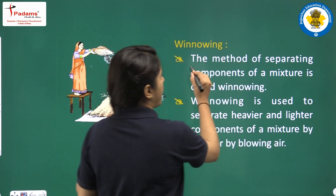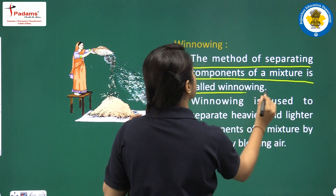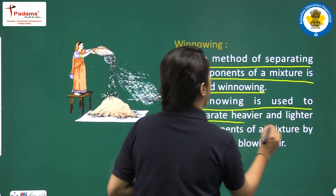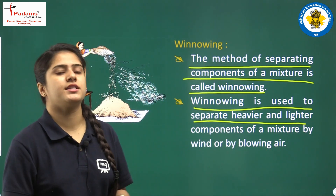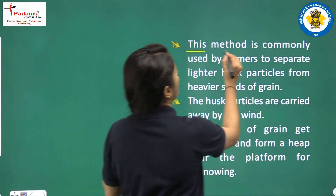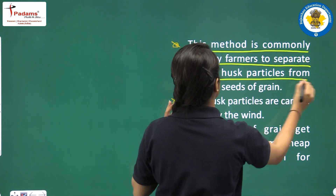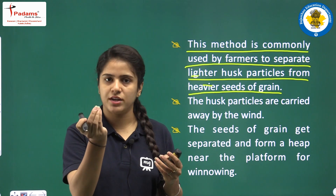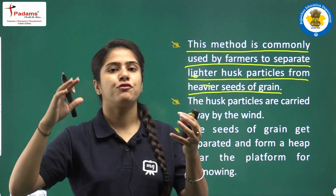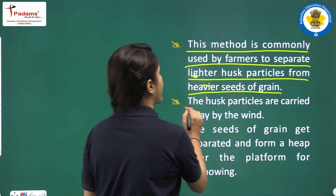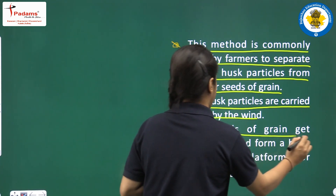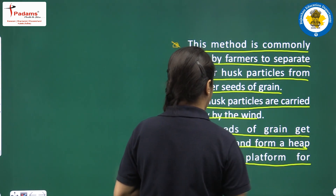Winnowing is used to separate heavier and lighter components of a mixture by wind or blowing. This method is commonly used by farmers to separate lighter husk particles from heavier seeds of grain. The husk particles are carried away by the wind, and the seeds of the grain get separated and form a heap near the winnowing platform.